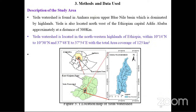When it comes to methods and data used, the study area: Yeda watershed is found in Amhara region, Upper Blue Nile Basin, which is dominated by highlands. Yeda is located in the northwest of Ethiopia, approximately 300 kilometers from the capital Addis Ababa. The watershed is located within 10°14'N to 10°13'N and 37°48'E to 37°54'E, with a total area of coverage of 125 square kilometers. From the Ethiopia map, within Amhara region, East Gojjam zone, the Yeda watershed is clearly delineated.